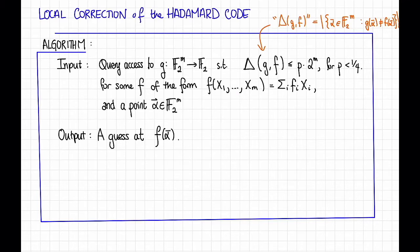Then when we say that we want to evaluate the codeword corresponding to f in a particular symbol, that means that we're asking for a particular evaluation point, α, in F₂^m. So that will be our actual input, some point α in F₂^m.